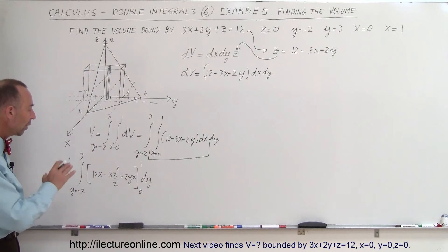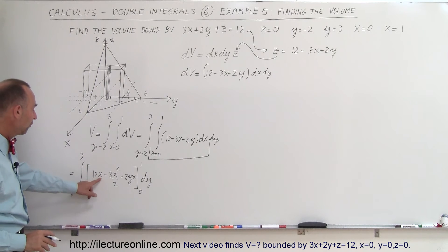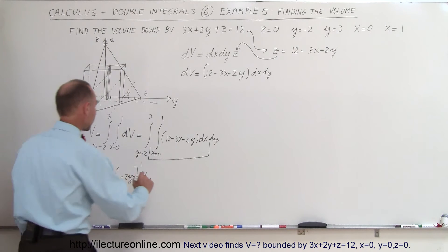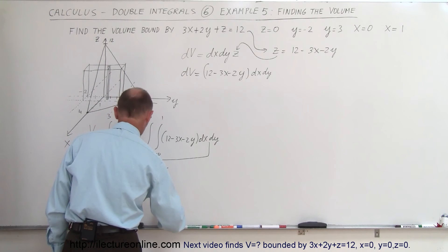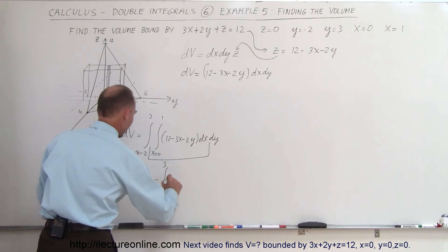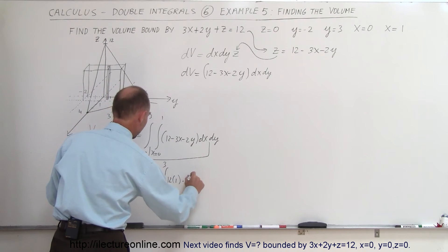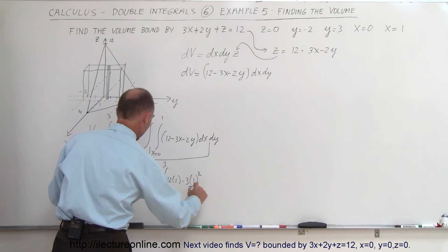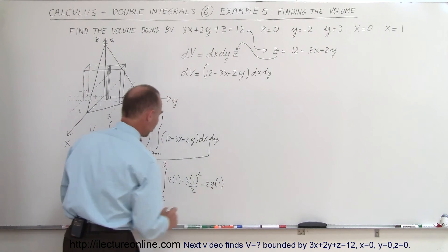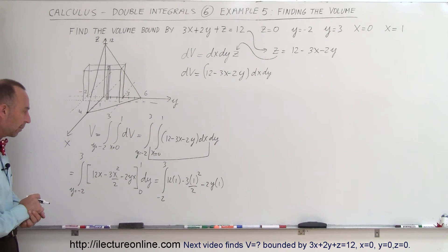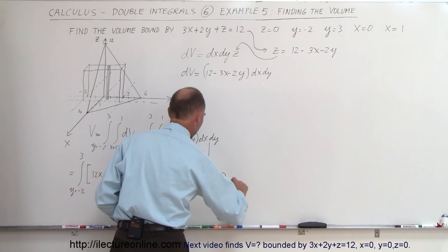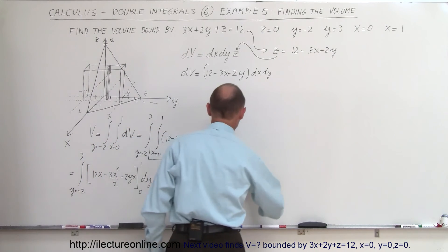Plugging in the limits for x: when we plug in 0 we get 0, so we only need the upper limit. The result is the integral from negative 2 to 3 of (12 times 1 minus 3 times 1 squared over 2 minus 2y times 1) DY — we're plugging in the upper limit x equals 1.